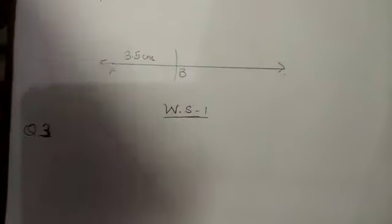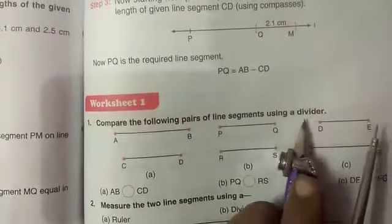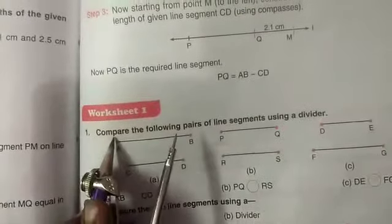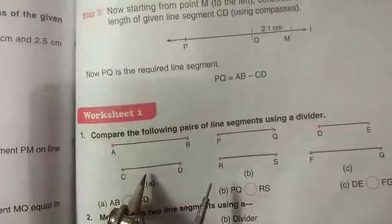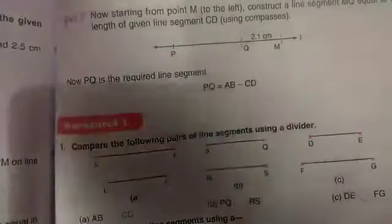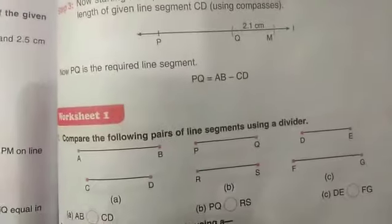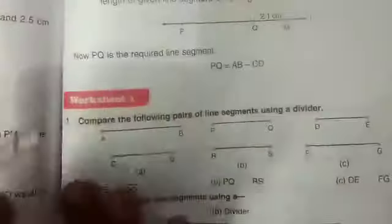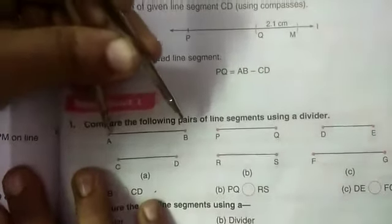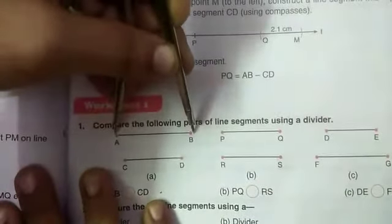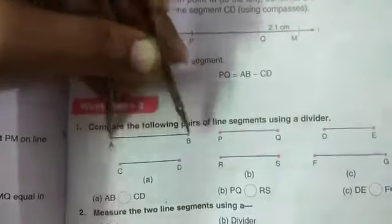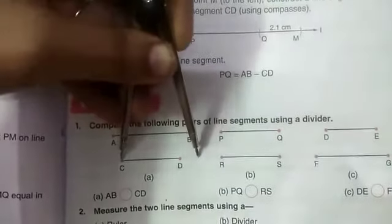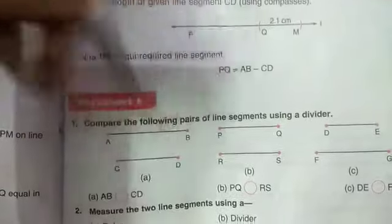Let us start our worksheet number one, question number one. Construct the following pair of segments using a divider - sorry, we have to compare. Now we are given two segments AB and CD. We will take the divider as I have discussed in my previous video. I will keep my divider like this and measure this part.